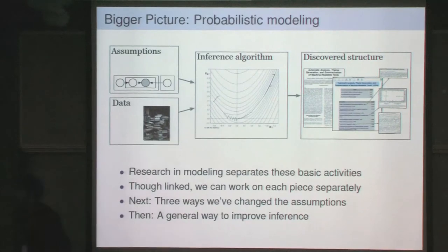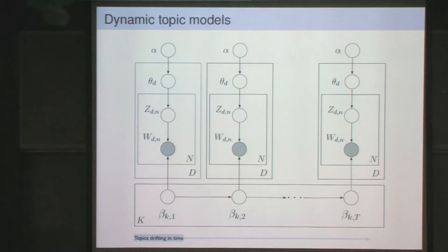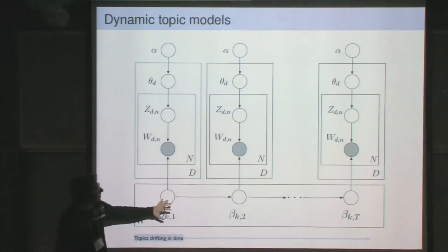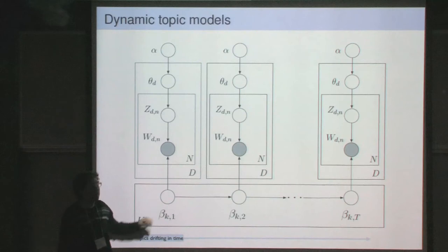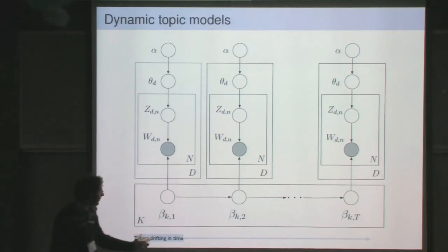The first assumption we can relax is that topics are static. LDA assumes one set of topics describes the entire collection and that documents are exchangeable—it doesn't matter which document we saw first or last. But analyzing Science Magazine spanning 120 years, it may not be reasonable to say the same topics in 1880 describe what we find in 2010. To deal with this, we developed the dynamic topic model, where topics drift through time. Rather than a single distribution over terms, a topic is now a sequence of distributions over terms.